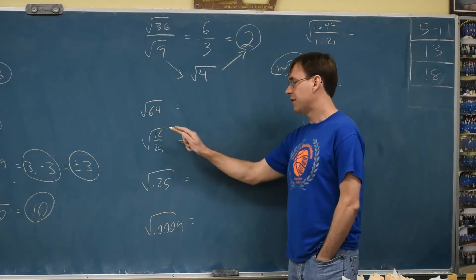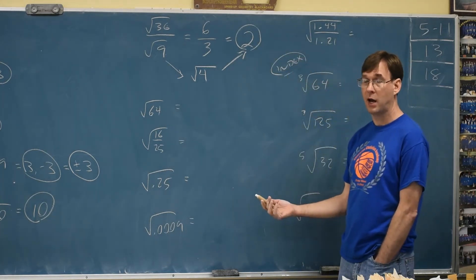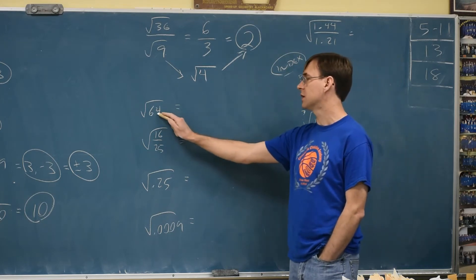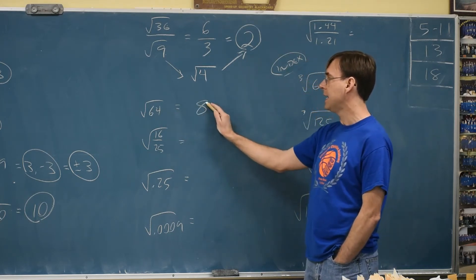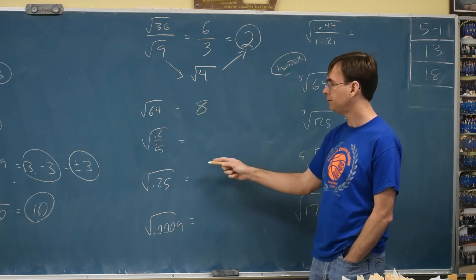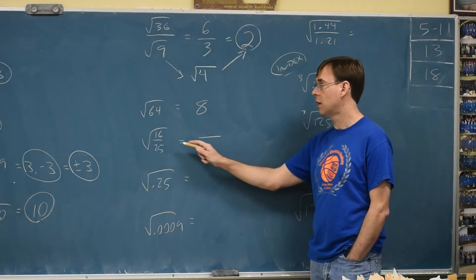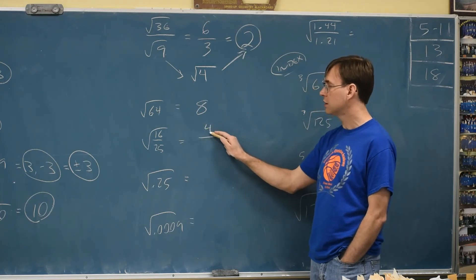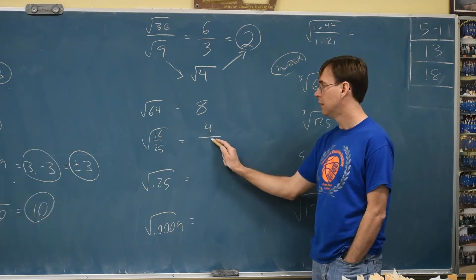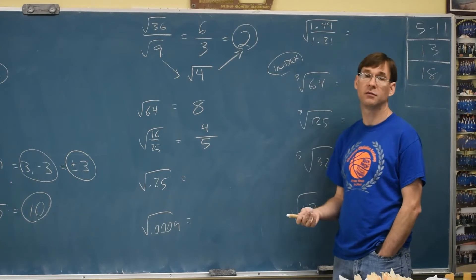Basic roots. If you think you can do this, pause the video and try it out. Square root of 64 is going to be 8, because 8 times 8 is 64. Square root of fractions stay fractions. Just do each one on its own. Top can be 4, because 4 times 4 is 16. Bottom could be 5, because 5 times 5 is 25.